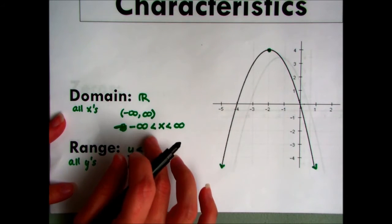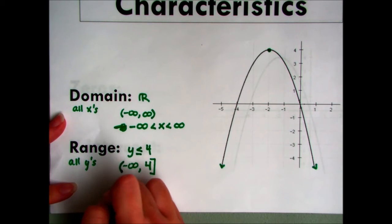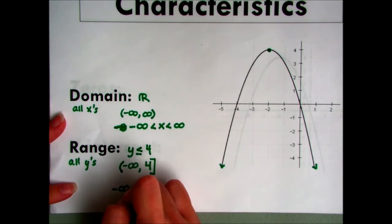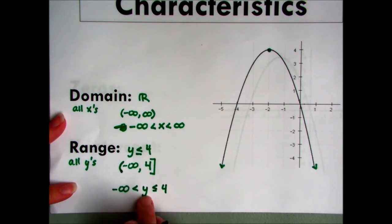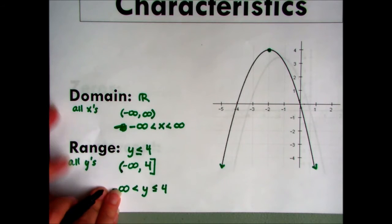Finally, we can write this as an inequality, in which we say we have negative infinity is less than y is less than or equal to 4. So y can be any value between negative infinity and 4, but notice we're going to use the equals here because it matches our bracket to say yes, y can actually equal 4.